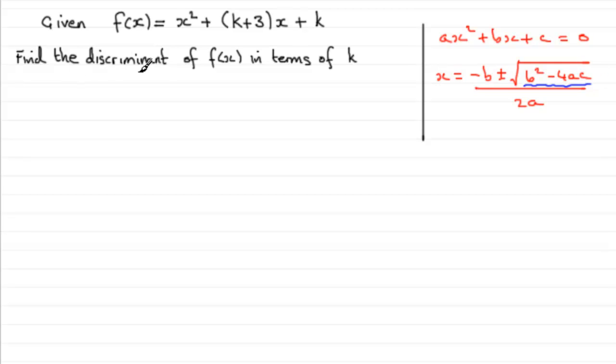So let's just work out what that discriminant is then. The discriminant equals b² - 4ac. Now what is the b value? Well, the b value is the coefficient of x, so in this case it's going to be k + 3. So that's going to be (k + 3)².